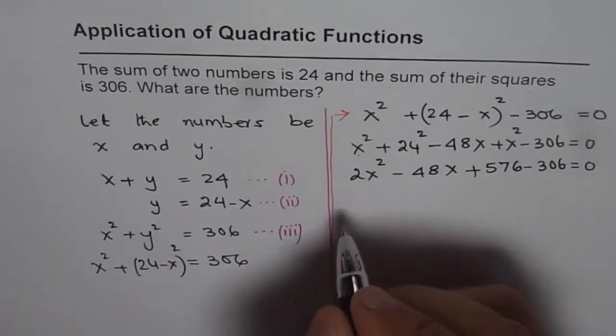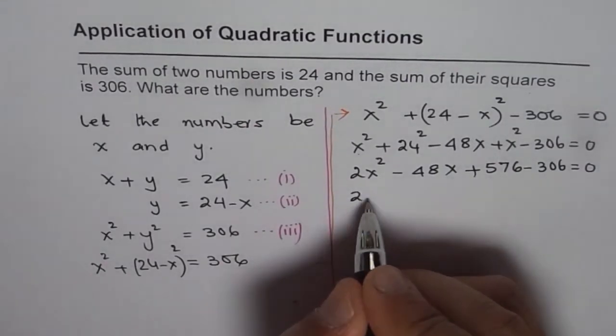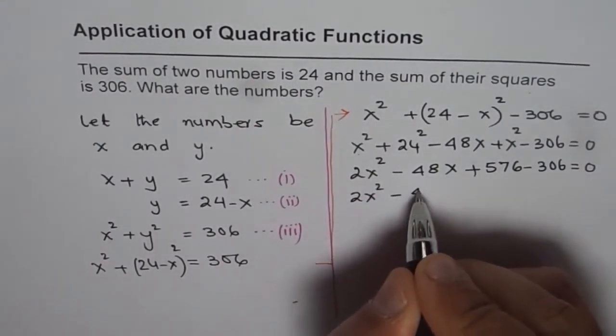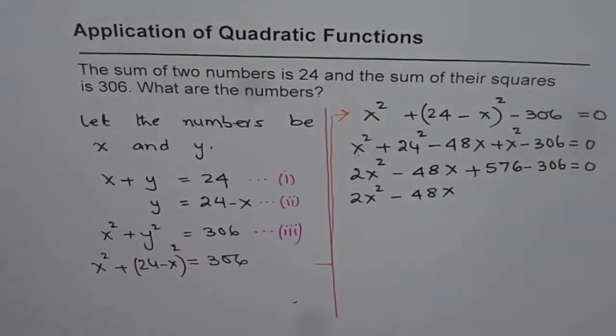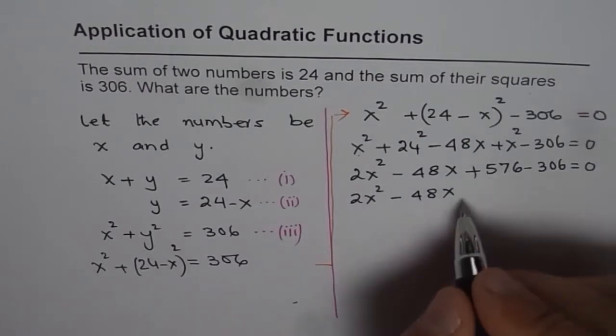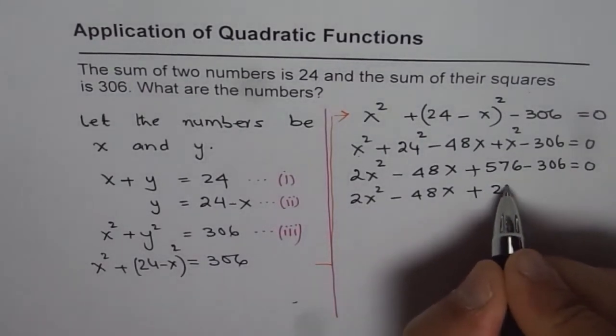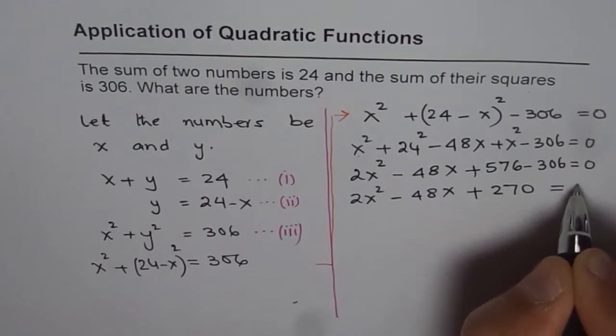We can combine this. So we get 2x squared minus 48x, and when I take away 306 from 576, we get 270. So we get plus 270 equals 0.